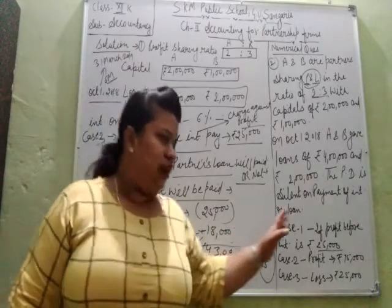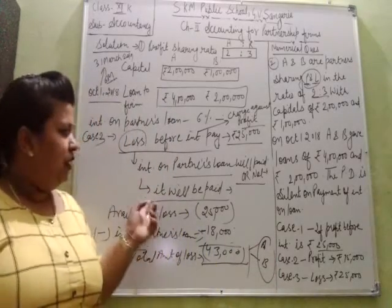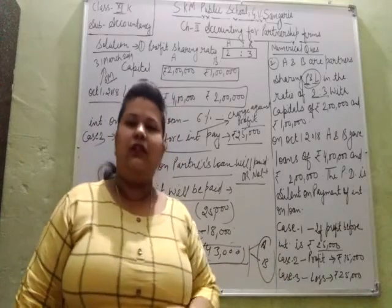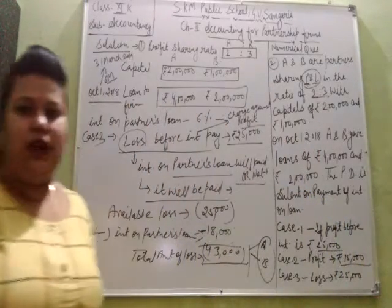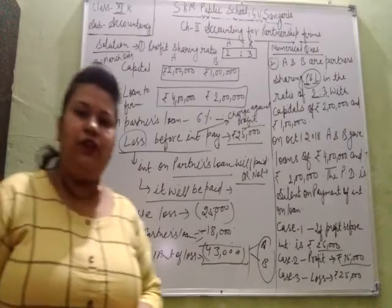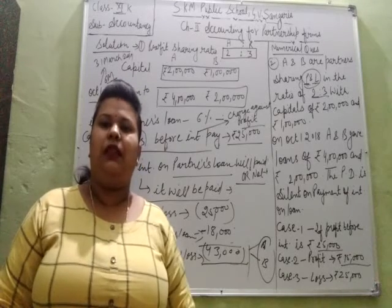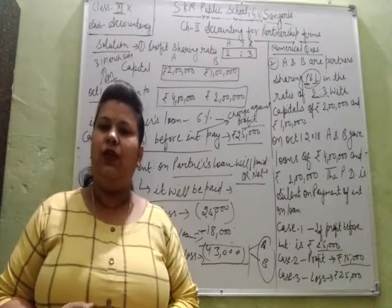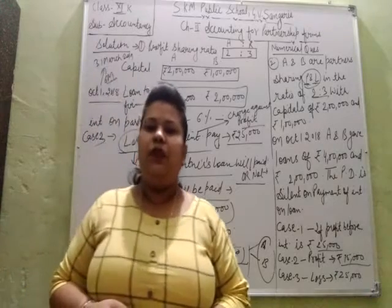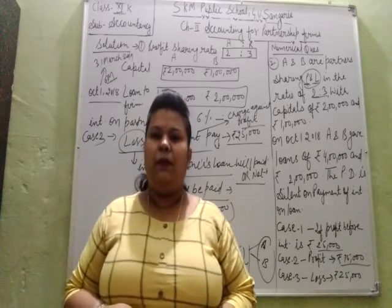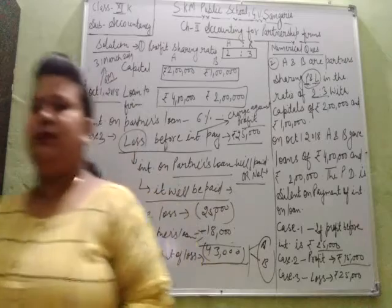We have discussed three cases. In Case 1, there were sufficient profits for interest payment. In Case 2, there were profits but they were not sufficient to cover the interest on partner's loan. In Case 3, the firm was facing losses. These three conditions related to interest on partner's loan have been covered. Students, solve the numerical questions from your book. If you face any problem, you are free to ask, but at least try to solve the questions. Stay home, stay safe, thank you.